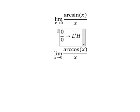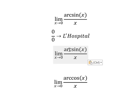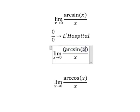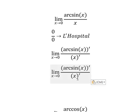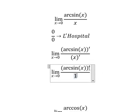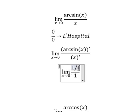That means we need to differentiate the numerator and denominator. So this one we have 1, this one we have 1 over the square root of 1 minus x squared.